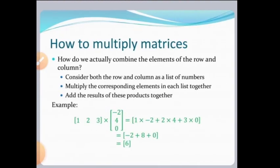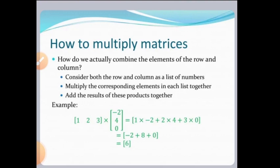Now see one example. The first matrix is [1, 2, 3] and the second matrix is the column matrix [-2, 4, 0]. Consider both the row and the column as a list of numbers, then multiply the corresponding elements and add the results together. The first matrix has only one row; multiplying by the column gives: 1×(-2) + 2×4 + 3×0 = -2 + 8 + 0 = 6. So we get one element, which is 6.